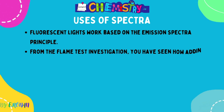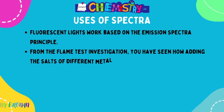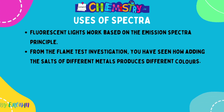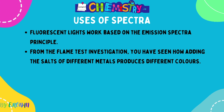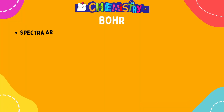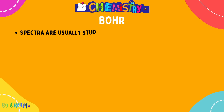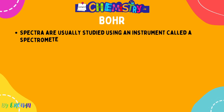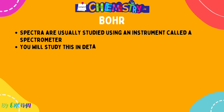Uses of spectra: fluorescent lights work off the basis of this emission spectra principle. Also, your mandatory experiment — the flame test investigation — demonstrates how adding different salts of different metals produces different colors. You need to know the names of your salts and the colors that they produce.